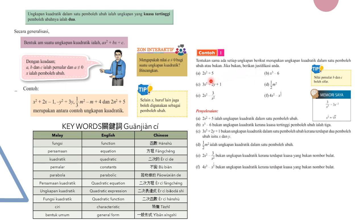For part A, 2x² + 5 is a quadratic expression. The only variable is x and the highest power is 2. For part B, x³ − 6, the only variable is x but the highest power is 3, so x³ − 6 is not a quadratic expression because the highest power of the variable is 3.